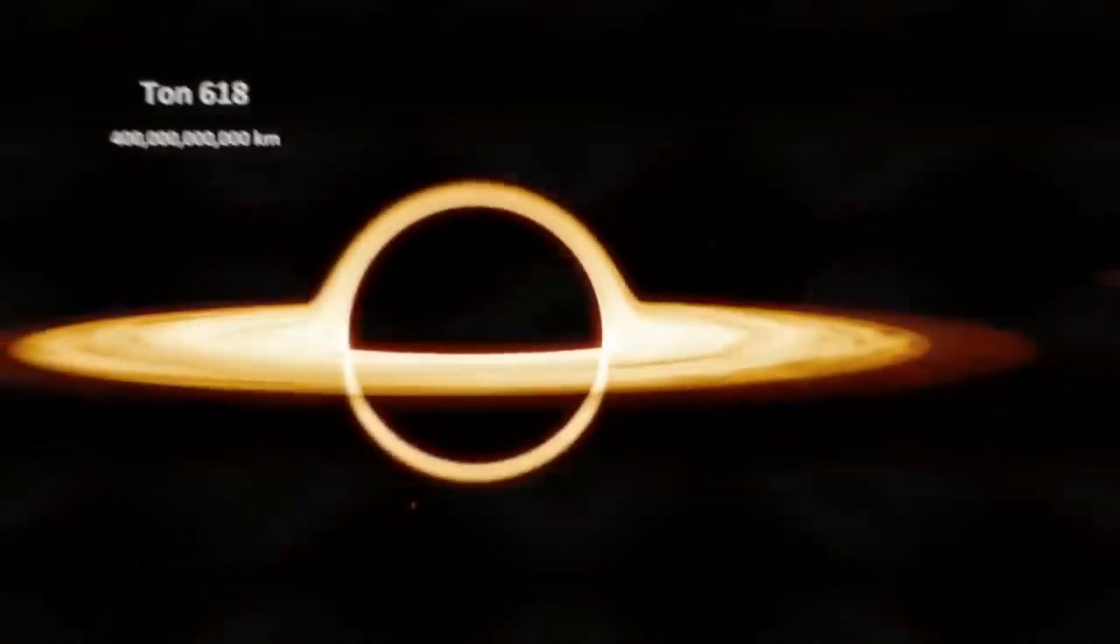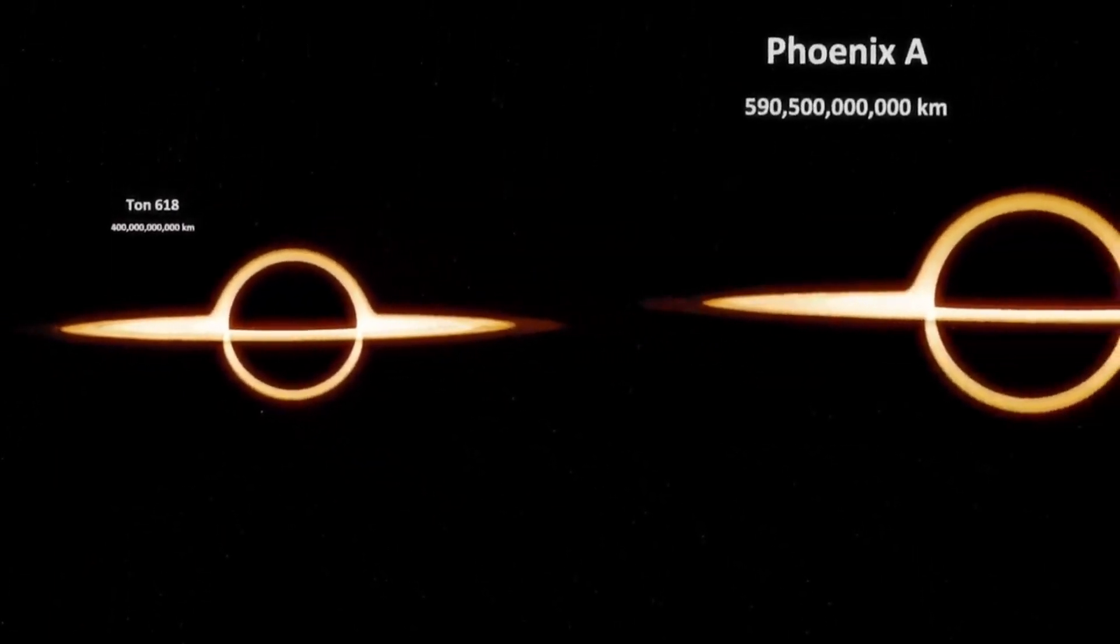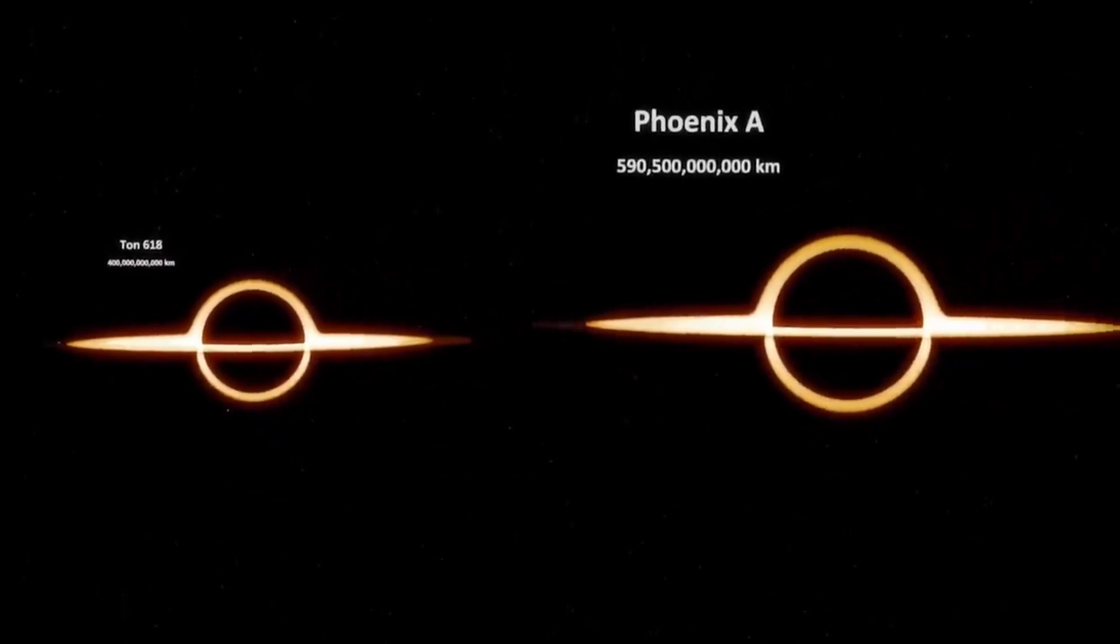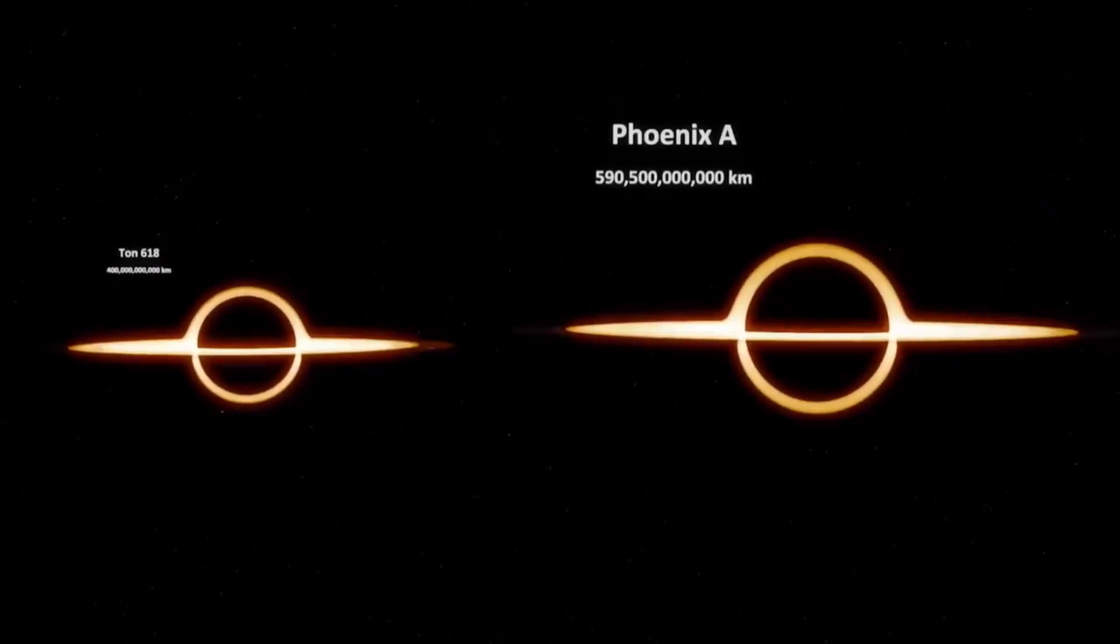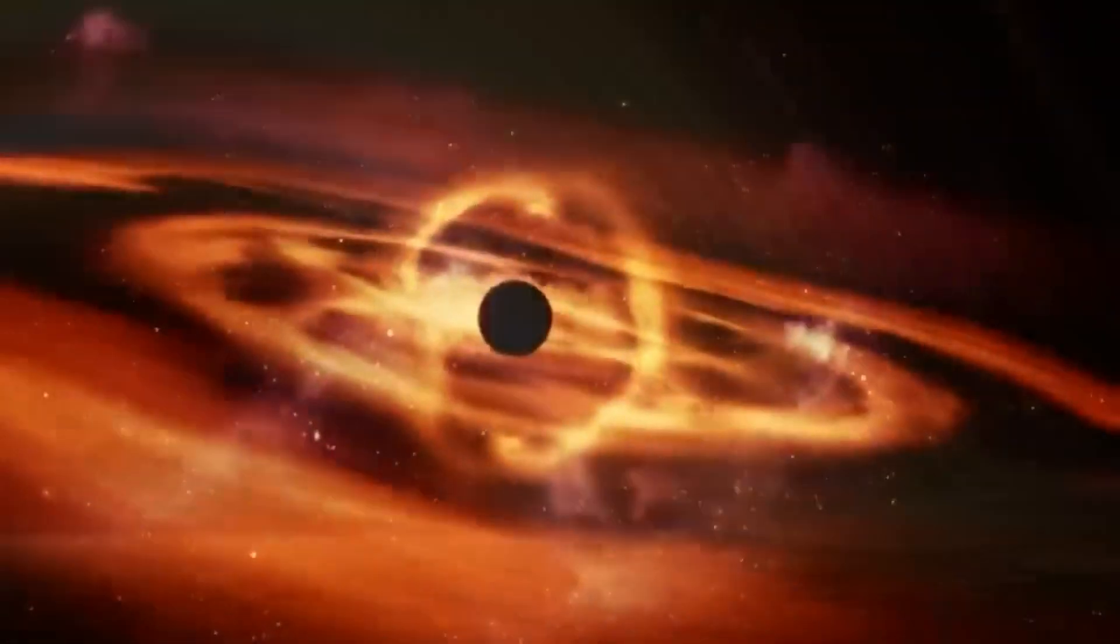The issue with Phoenix A and its predecessor, the former reigning supermassive black hole Ton 618 with 66 billion solar masses, surpassing the threshold proposed by King, raises the question of why they have grown to such tremendous sizes.